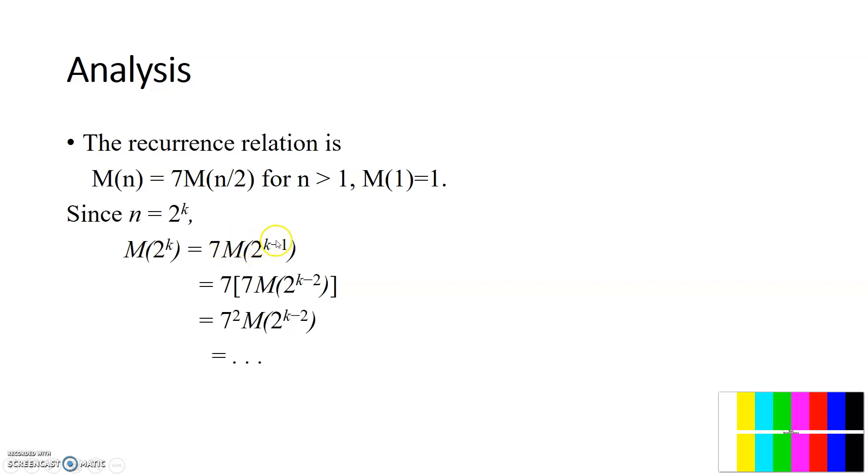7 into M of 2 to the power of k minus 2. That is 7 into M of 2 to the power of k minus 2. That is 7 into 7, 7 squared M of 2 to the power of k minus 2 here.